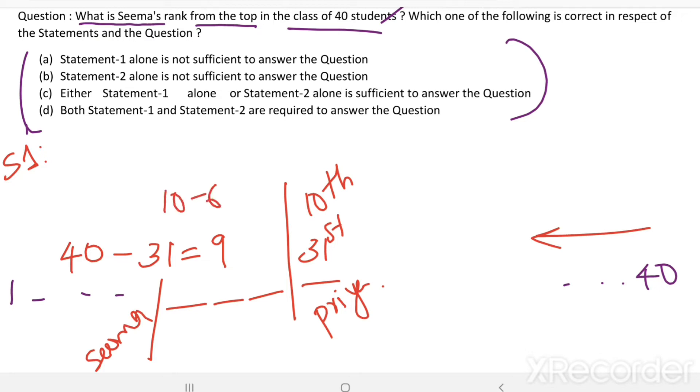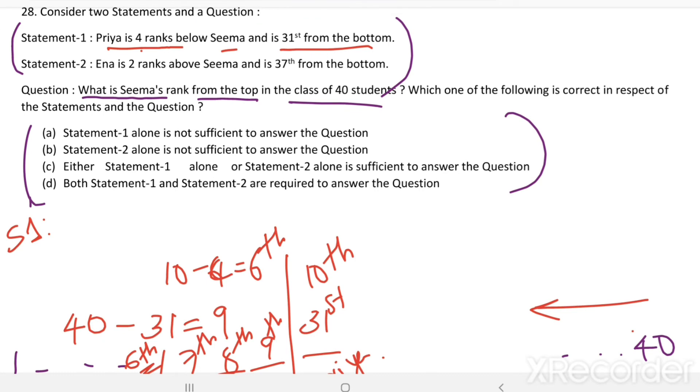10 minus 4 equals 6th. Or we can say 10th, 9th, 8th, 7th. SEMA's position is at 6th. Therefore, statement 1 alone is sufficient to find SEMA's rank from the top.